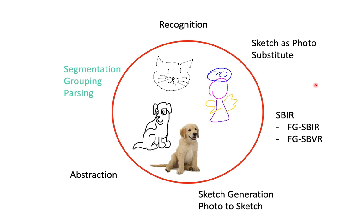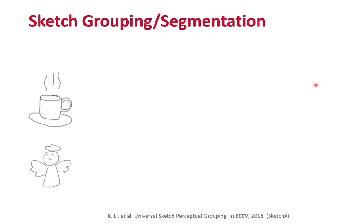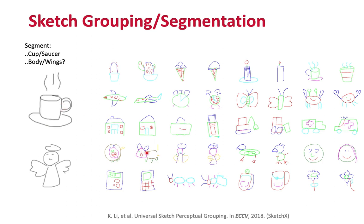Moving on, other more interesting kinds of analysis include segmentation, grouping, and parsing. Semantic segmentation is very established in photo analysis; in sketches we want to do something similar — for example, determining which strokes belong to a saucer versus a cup. Back at ECCV 2018, we proposed what might be the first deep model for this kind of task, introducing the sketch perceptual grouping dataset. We can group parts of objects such as the windows, door, body, and roof of a house into different semantic parts.